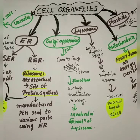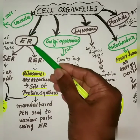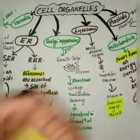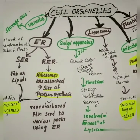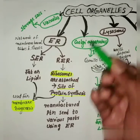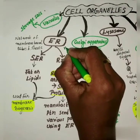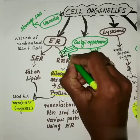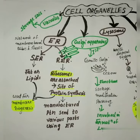Next, we will discuss cell organelles: vacuoles, endoplasmic reticulum, Golgi complex, lysosome, mitochondria, and plastids. First, the endoplasmic reticulum, shortly referred to as ER. The endoplasmic reticulum is a large network of membrane-bound tubes and sheets. This is the structure of the endoplasmic reticulum.